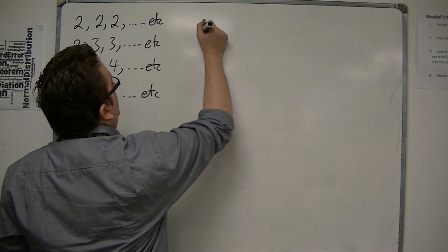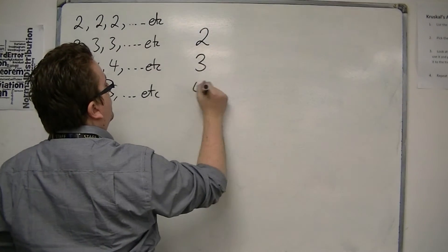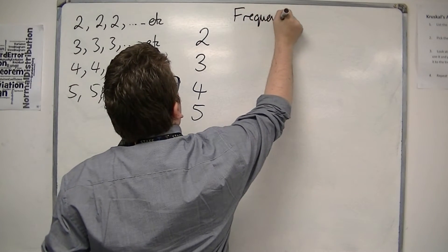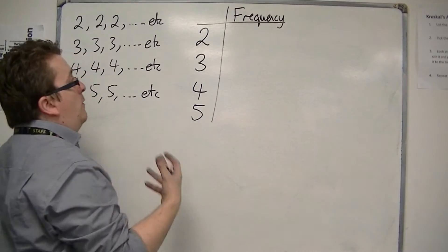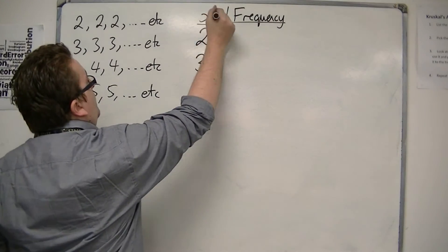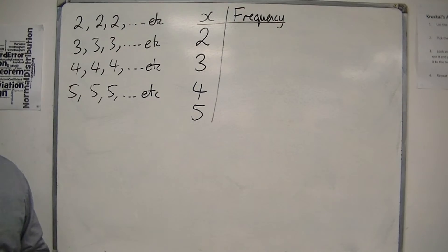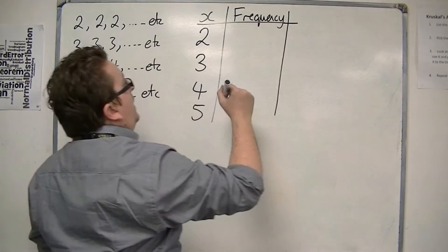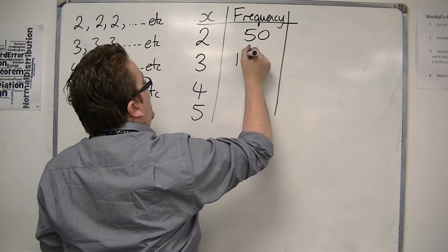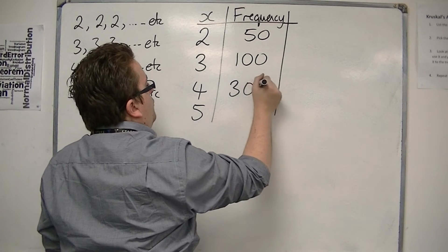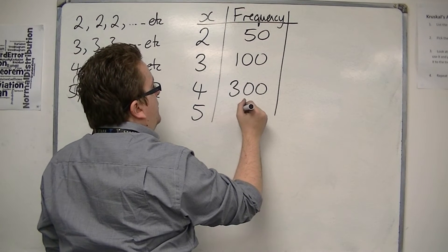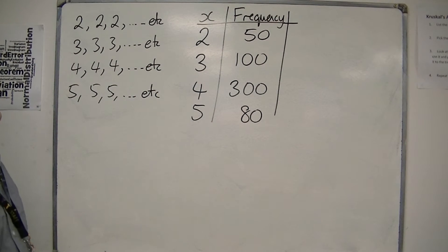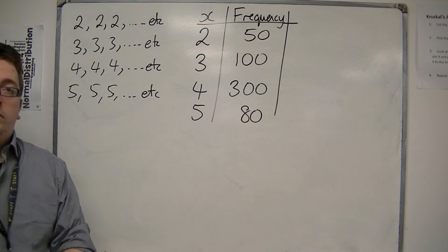We're going to have the numbers and their frequencies. Remember, frequency means how many. We're going to call this column the x's — our numbers. So the frequency: let's say we had fifty twos, a hundred threes, three hundred fours and eighty fives. So we've got a huge list of numbers.